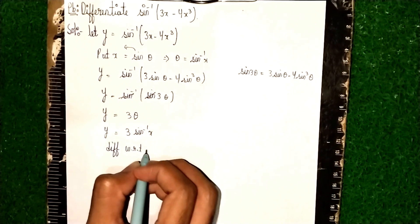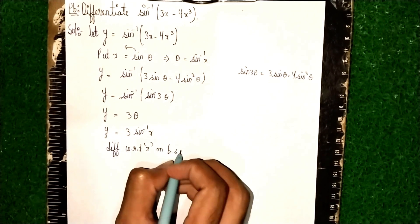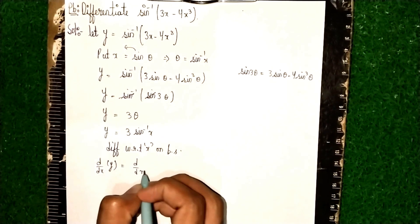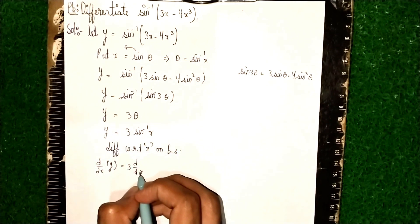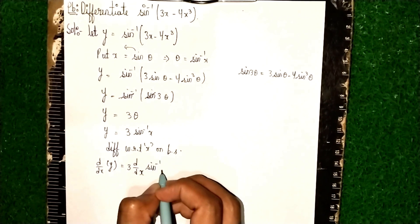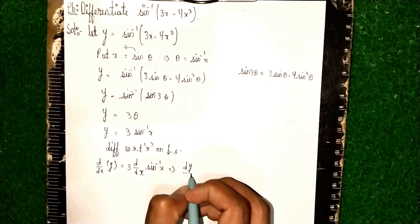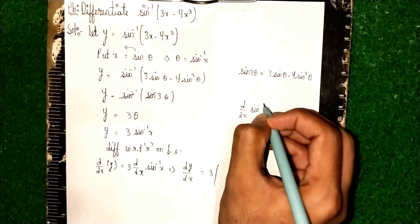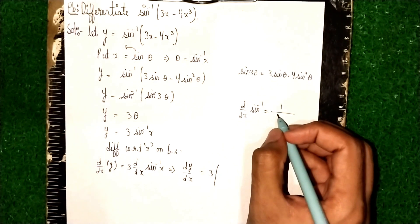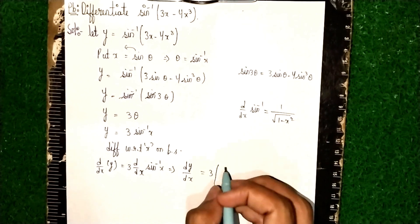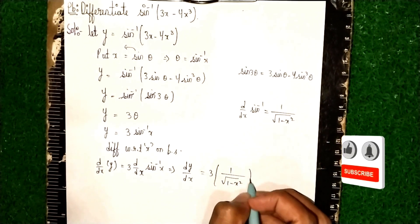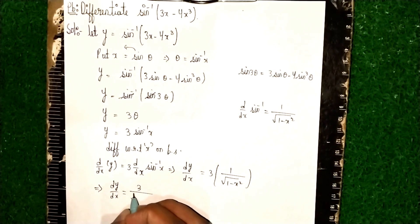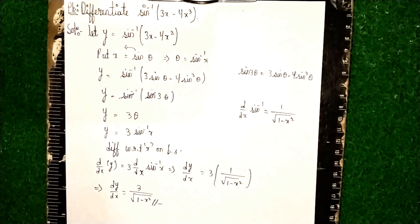Now differentiate both sides with respect to x. We get dy/dx = 3 · d/dx(sin⁻¹ x). Using the formula d/dx(sin⁻¹ x) = 1/√(1 - x²), the final answer is dy/dx = 3/√(1 - x²). Thanks for watching.